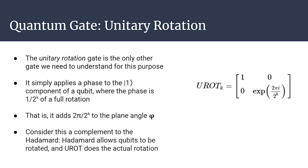The next gate, the unitary rotation gate (U-rot), is simpler than the Hadamard gate. All it does is apply a relative phase to the |1⟩ component of the qubit. The phase used is 1/(2^k) of a full rotation. In other words, it adds 2π/2^k to the angle φ. The Hadamard gate allows a qubit state to be rotated into the plane, and then we use the U-rot gate to actually perform the rotation.